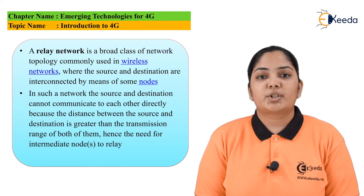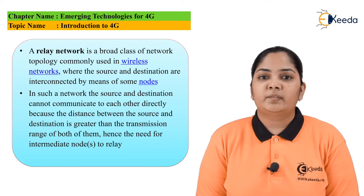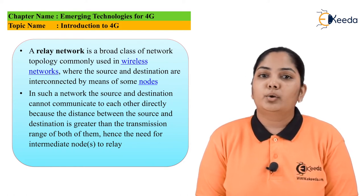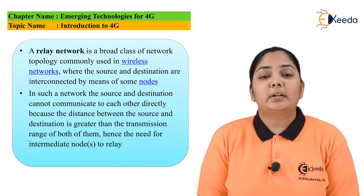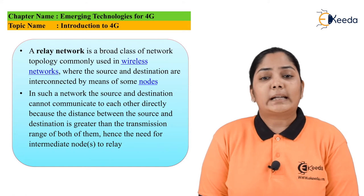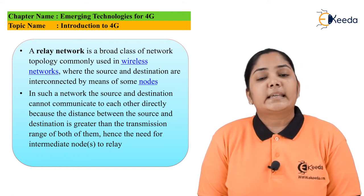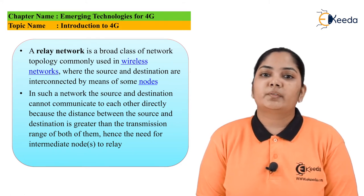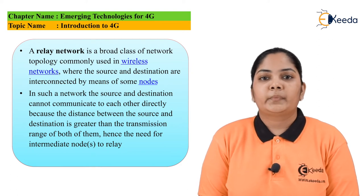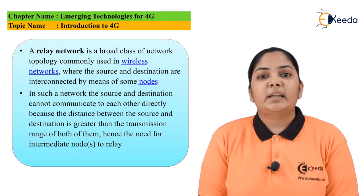The last ingredient in 4G communication systems is the relaying network. Relaying networks are a broad class of networks which relay information from the source to the destination with intermediate nodes in between. These intermediate nodes help in the transmission or relay of information. When the source transmitter and receiver are extremely far apart and the range of the transmitter is not able to reach the other end, intermediate nodes are required so that the range of the transmitter is able to reach the first node, and information is relayed node by node until it reaches the endpoint.